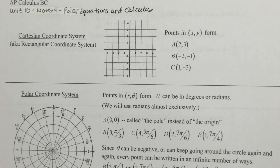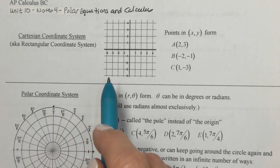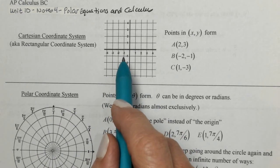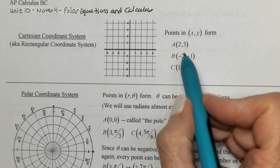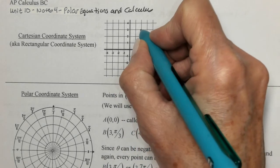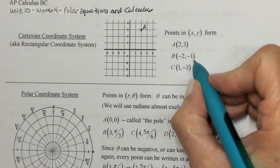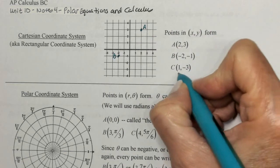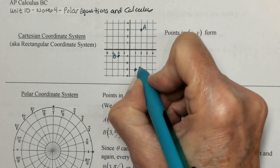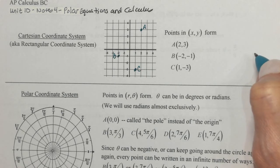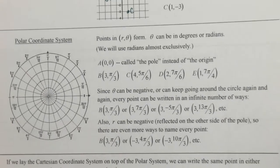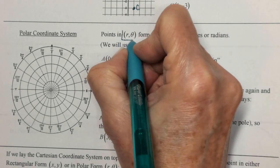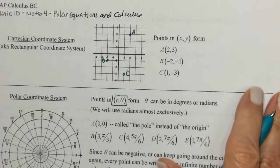We've been dealing this year with equations and points on the Cartesian coordinate system. We can graph the point (2, 3) — that would be A. We can graph the point (−2, −1) — that would be B — and (1, −3) here. So we can do a lot with the Cartesian, or rectangular, coordinate system. With polar coordinates, all the points are in the form (r, θ) rather than (x, y).